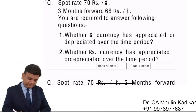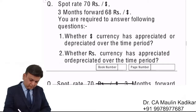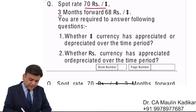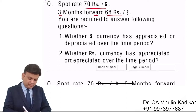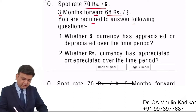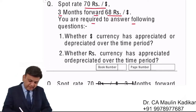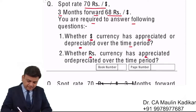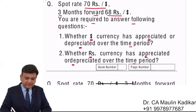Let us see the next question. Spot exchange rate is 70 rupees per dollar. Three months forward exchange rate is 68 rupees per dollar. You are required to answer the following questions: whether the dollar currency has appreciated or depreciated over this time period, and whether the rupee currency has appreciated or depreciated over the time period.